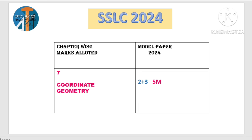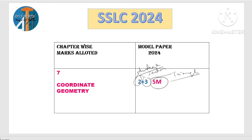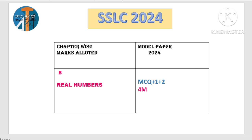7th lesson — coordinate geometry: 1 mark MCQ ಕೊಟ್ಟಿದ್ದಾರೆ, 2 marks ಮತ್ತು 3 marks ಒಂದೊಂದು. 2 marks ಅಲ್ಲಿ distance formula based ಅಥವಾ section formula based ಕೊಡ್ತಾರೆ. 3 marks ಗೆ area of triangle related ಕೇಳ್ತಾರೆ. So 5 marks weightage for coordinate geometry.